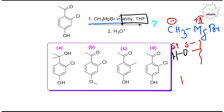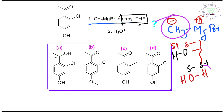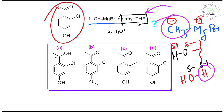If you look at the water molecule H-O-H, the oxygen is delta minus and the hydrogen is delta plus. The Grignard methyl reacts with this proton and ultimately produces methane, which escapes. This wastes the Grignard reagent. That's why anhydrous reaction conditions are essential. Now, looking at the molecule, there are three reactive sites to consider.